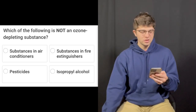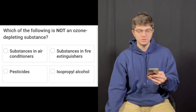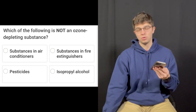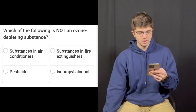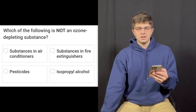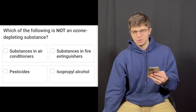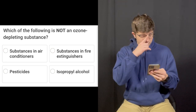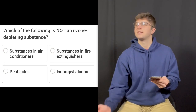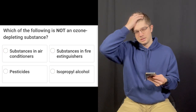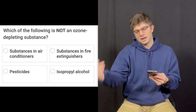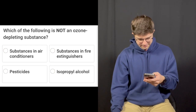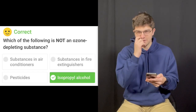Question number five: Which of the following is not an ozone depleting substance? Ozone is O3, you know that from chemistry. Options are: substances in air conditioners, substances in fire extinguishers, pesticides, or isopropyl alcohol. I'm between pesticides and isopropyl alcohol — one's liquid, one's gas. I'm gonna go with isopropyl alcohol. That's correct. We both were on the same page on that.